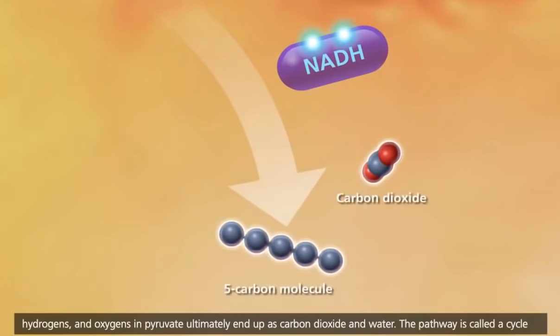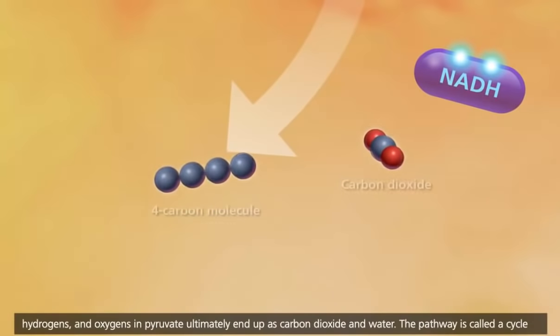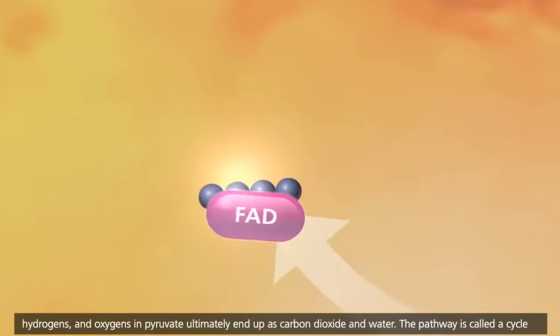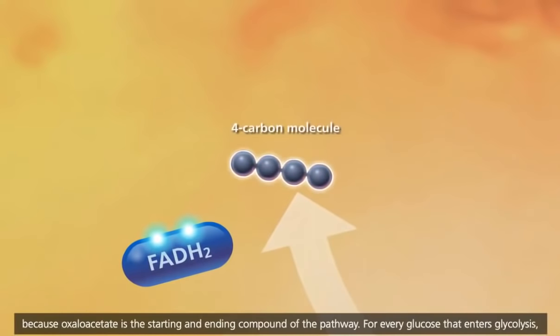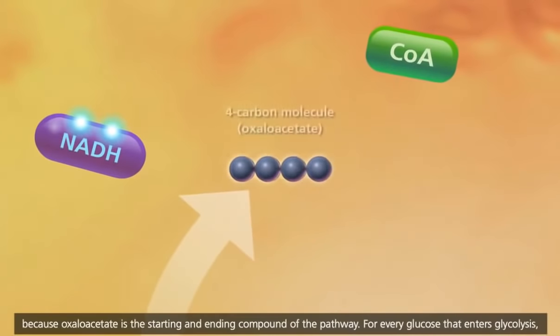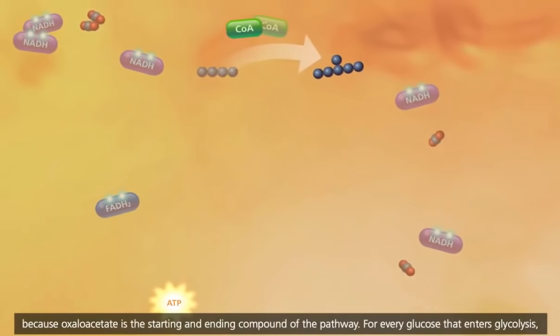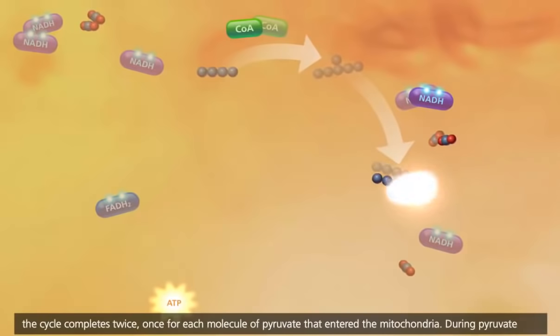The pathway is called a cycle because oxaloacetate is the starting and ending compound of the pathway. For every glucose that enters glycolysis, the cycle completes twice, once for each molecule of pyruvate that entered the mitochondria.